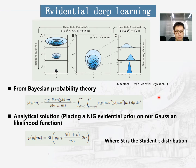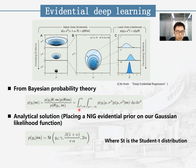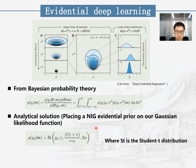For Bayesian probability theory, the model evidence or marginal likelihood is defined as the likelihood of an observation, specifically y given the evidential distribution parameter M, and is computed by marginalizing over the likelihood parameter theta. In the case of placing a Normal-Inverse-Gamma distribution prior on our Gaussian likelihood function, an analytic solution does exist. The result follows a Student-T distribution.